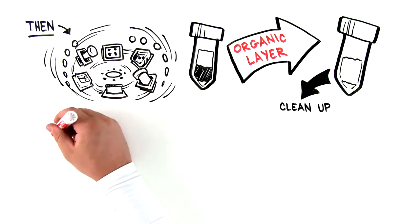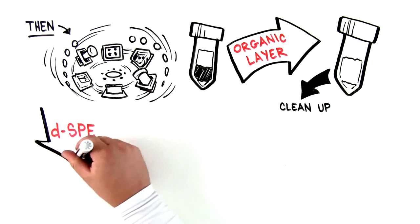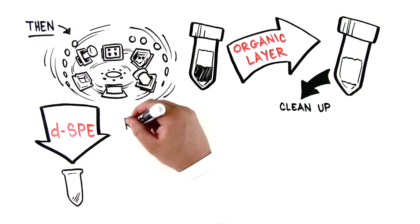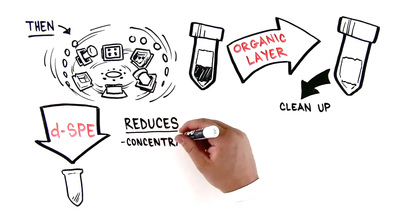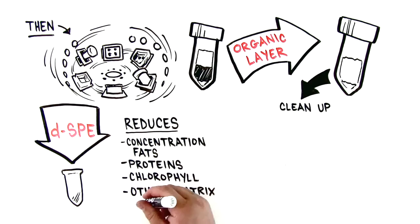Cleanup. In this final step of the QuEChERS workflow, add DSPE, or dispersive SPE, to the tube containing the organic extract. The DSPE step reduces the concentration of fats, proteins, chlorophyll, and other undesired matrix components.